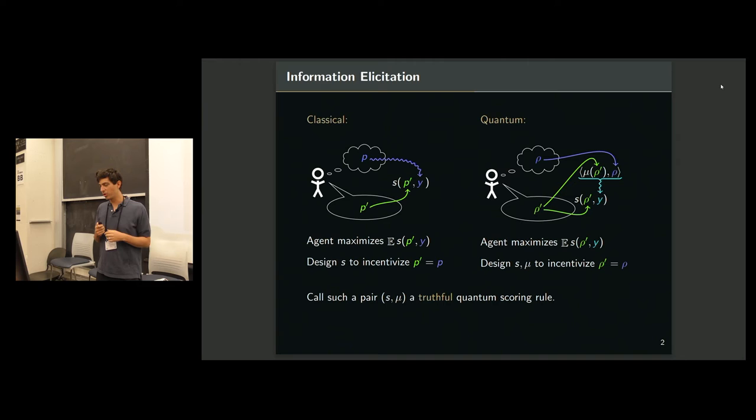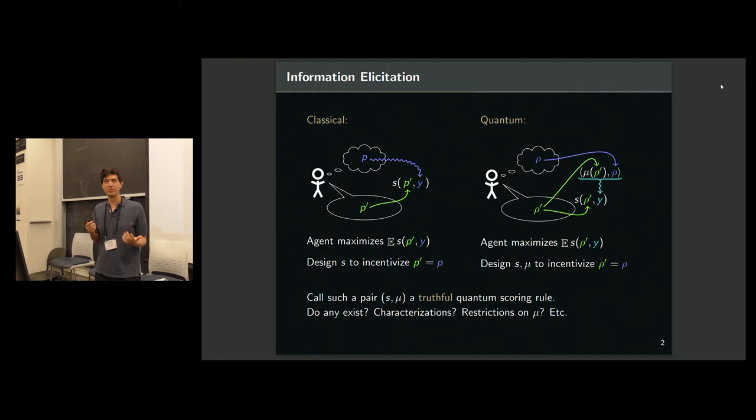So basically, I was trying to figure out what's going on in this space. Very basic questions like, do any truthful quantum scoring rules exist? Can we characterize them? What about if you make restrictions on the measurement function and things like this?